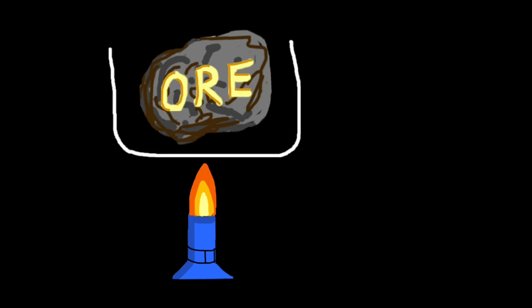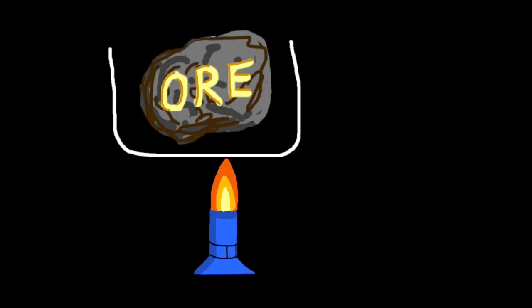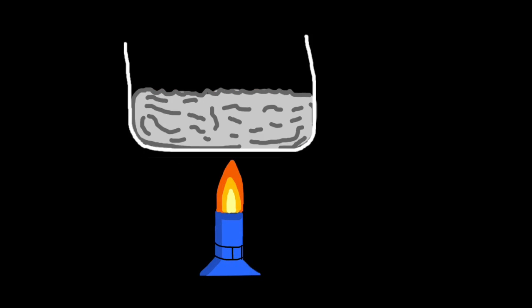But to give you a more real-world example, here we have aluminium ore or bauxite. And what we're going to do is we're going to heat it strongly until it melts. And now we have molten, that means melted, aluminium oxide. And now we're ready to apply electrolysis.